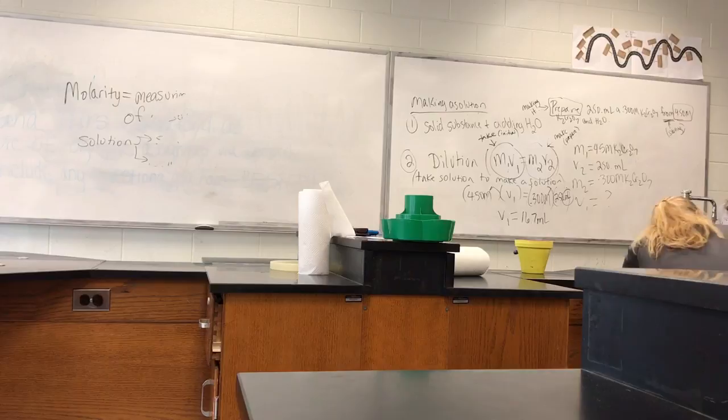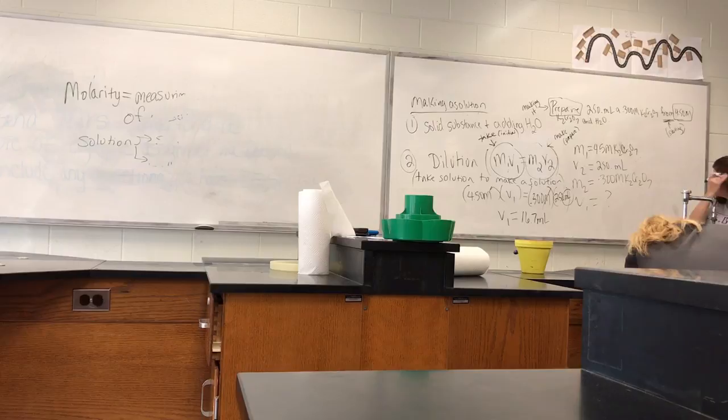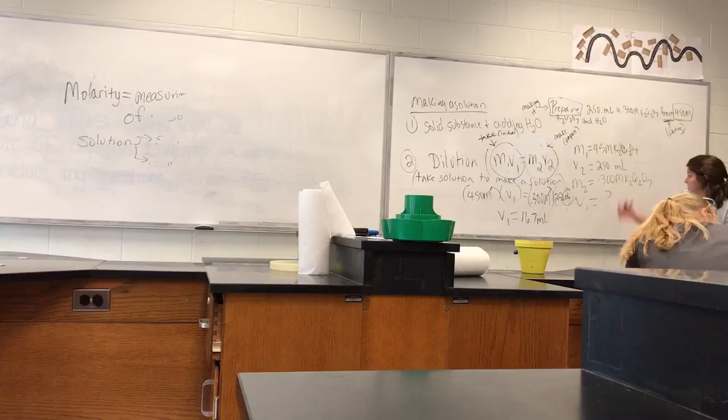All right, so now how do we describe how we would make this? So now remember that we're taking this and we're making this. So that's really all we have to say. So we're going to describe how we would make it. We're taking our M1 and our V1 and we're making our M2 and our V2, right? So we could say something like this. Let's take, let's write it over here, take...